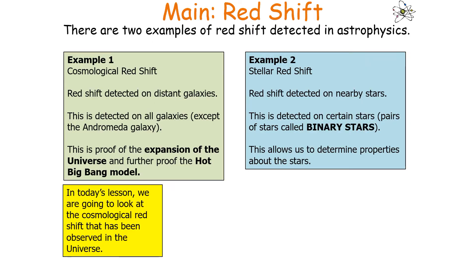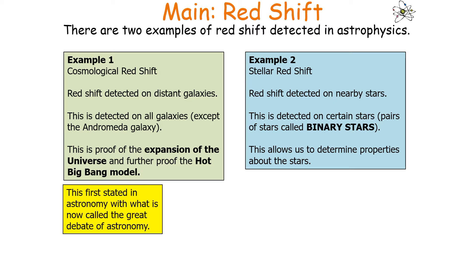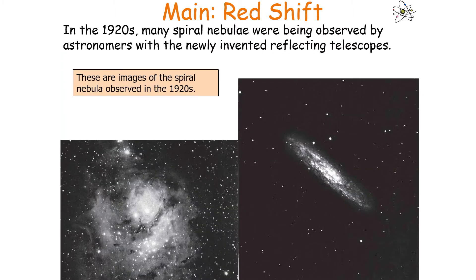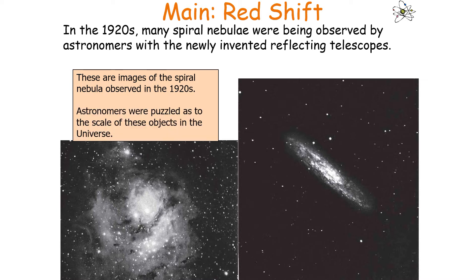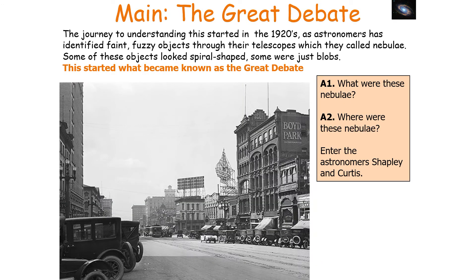There are two examples of redshift used in astrophysics. Today we're going to look at cosmological redshift observed in the universe. This first arose in astronomy with what is now known as the Great Debate of Astronomy. In the 1920s, many spiral nebulae were being observed by astronomers with newly invented reflecting telescopes. Astronomers were puzzled as to the scale of these objects, which led to something called the Great Debate: what were these nebulae and where were they?